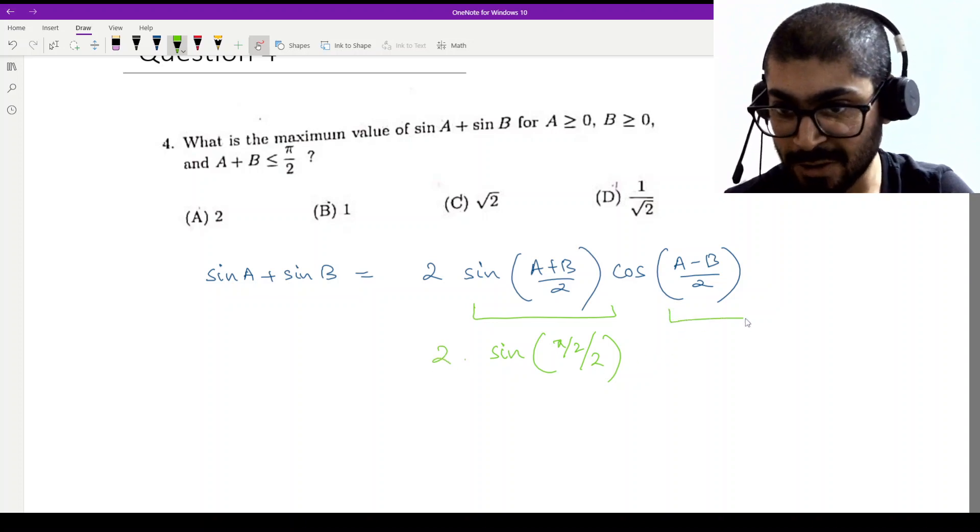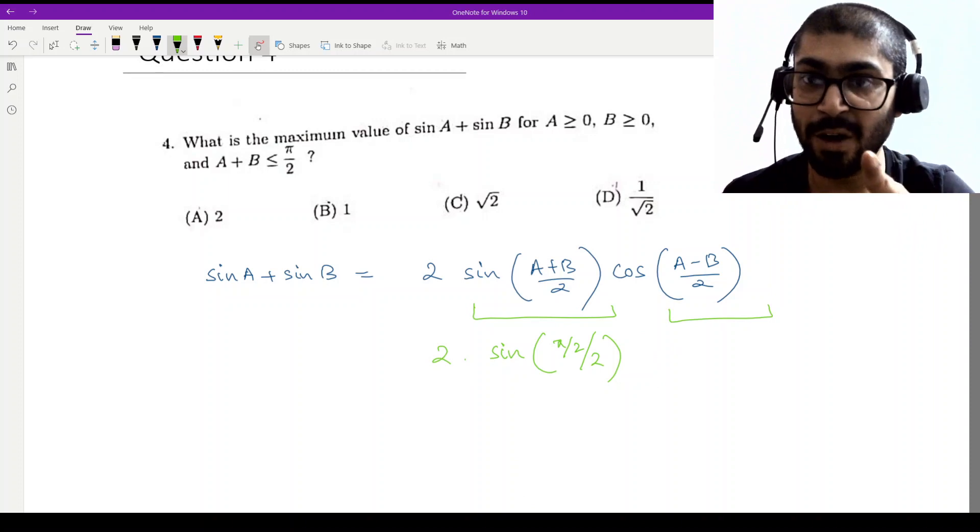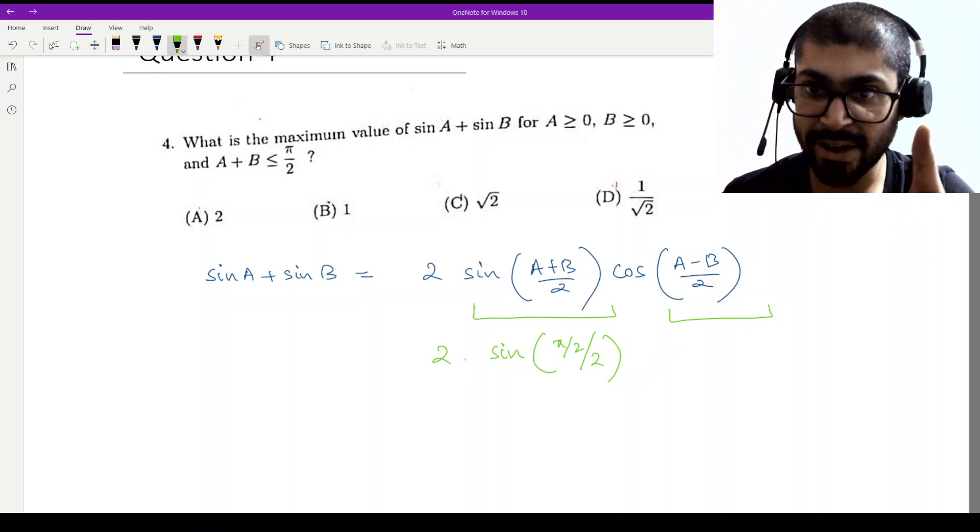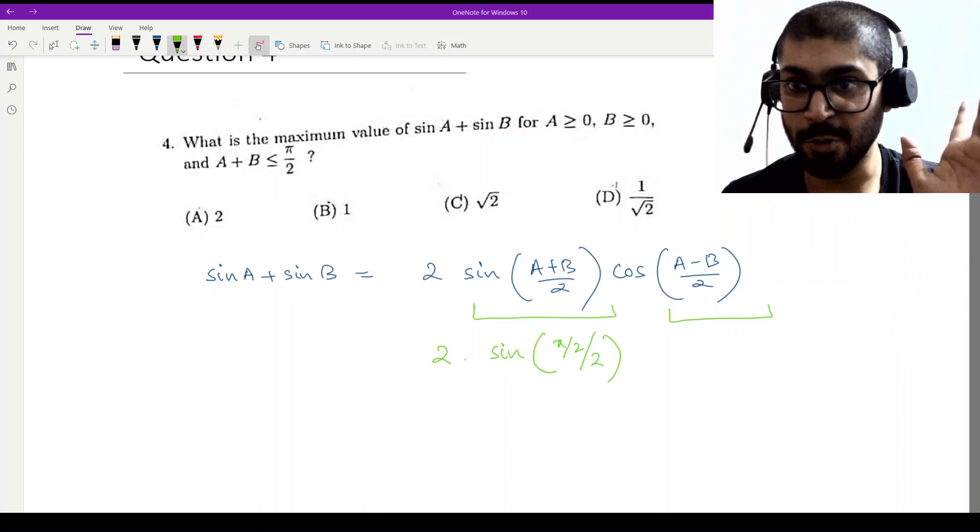And this cos portion is maximum when will it be maximum? When will it be 0? When A equals B, right?